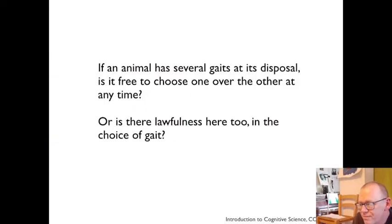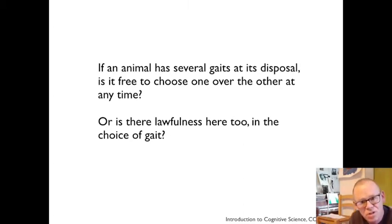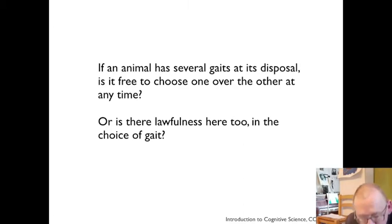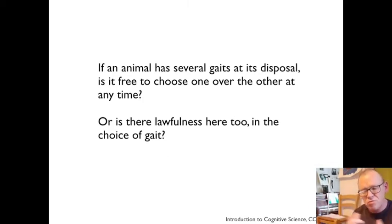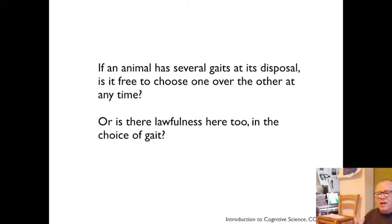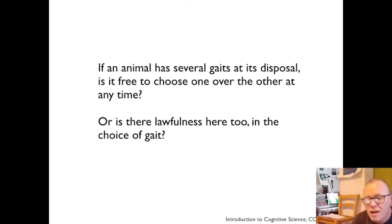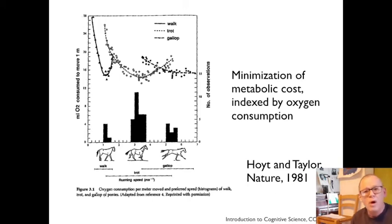A given animal may have several gaits at its disposal — several ways in which it can bring all its limbs together and constrain their degrees of freedom in order to locomote. We saw with the hands there were two discrete ways to coordinate, and you switch from one to the other. So when an animal has multiple gaits at its disposal, one might think they're just free to choose one or the other with no rhyme or reason to it — but in fact there's a great deal of rhyme or reason to it.